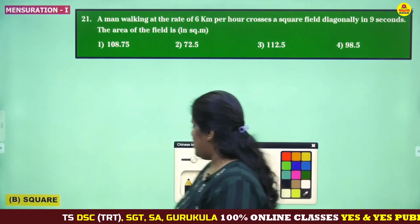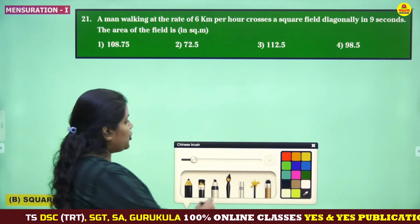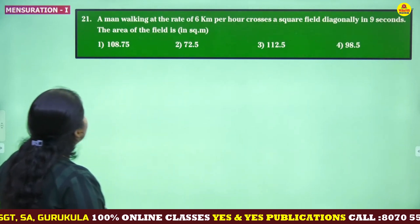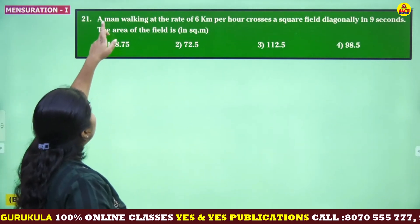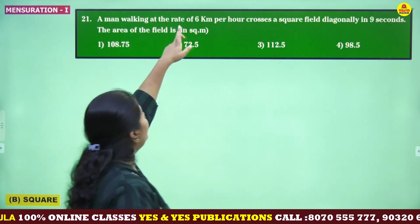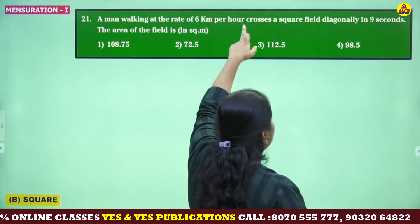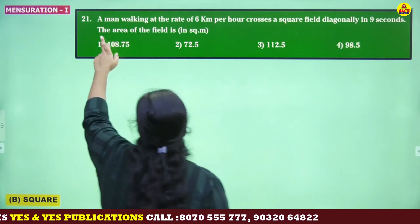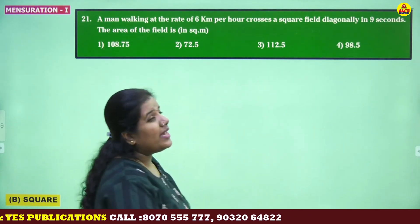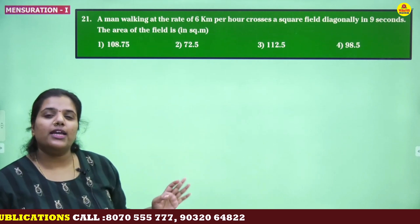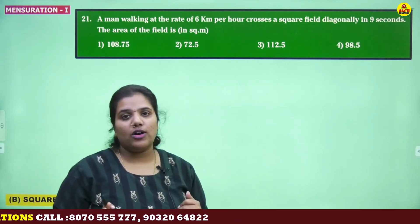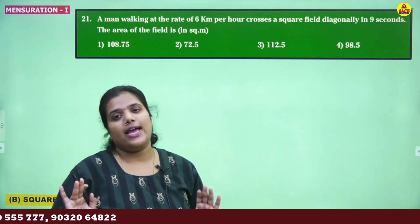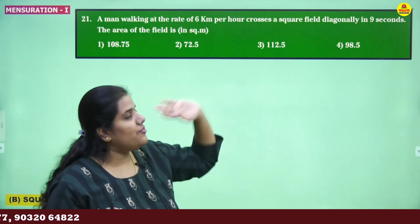Here comes the first question based on the shape square. A man is walking at the rate of 6 kilometers per hour, crosses a square field diagonally in 9 seconds. The area of the field is? Very interesting question — they have not given any dimension. Side is not given, area is not given, perimeter is not given. We are supposed to calculate everything based on the given information.